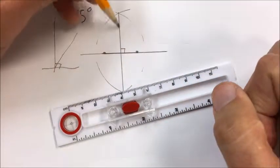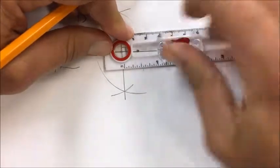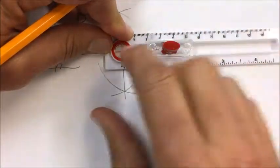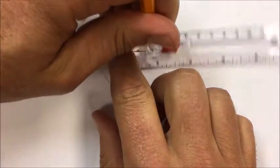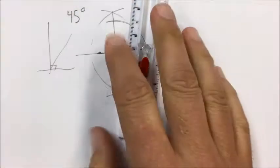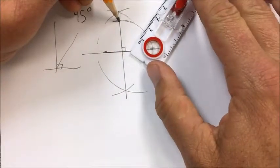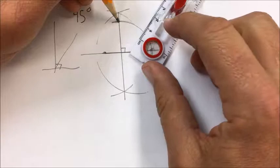I'm going to bisect this angle that's right here. So I'll just start with an arbitrary length here, I'll mark it off, and then I created these two points. Now from these points I'll just do a length again.